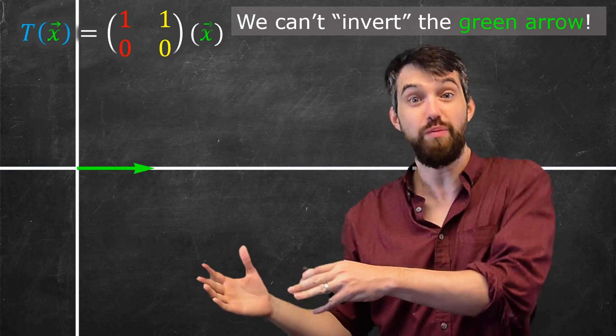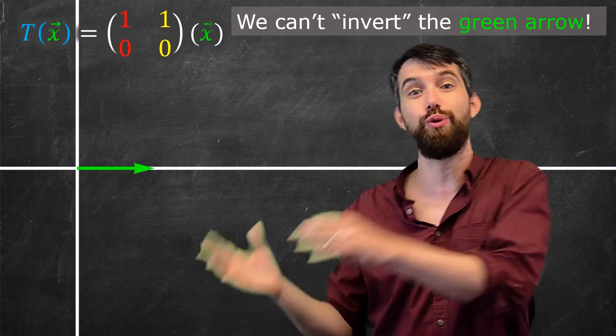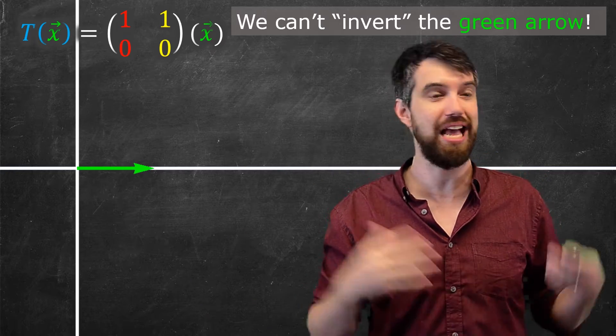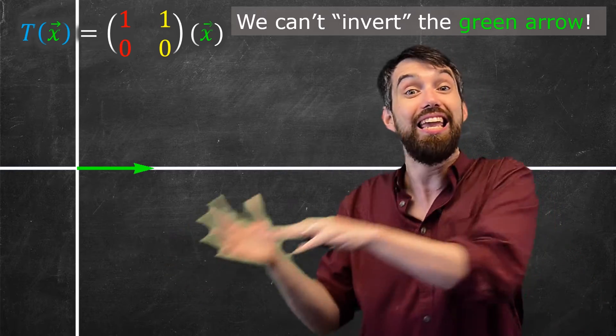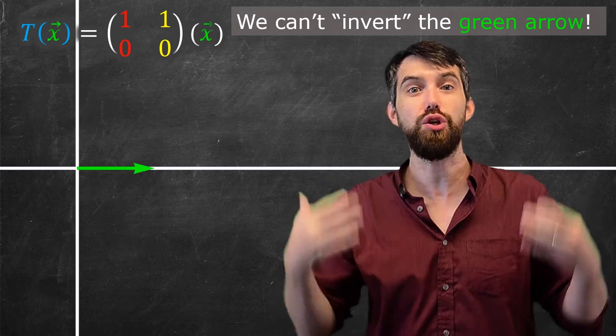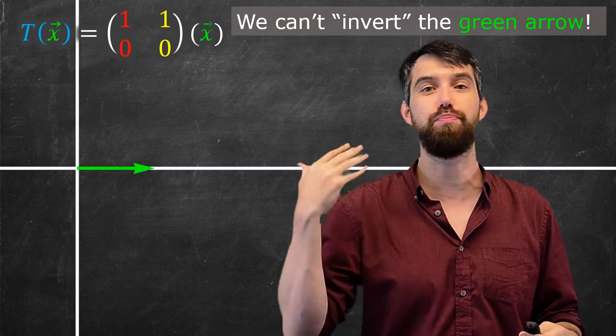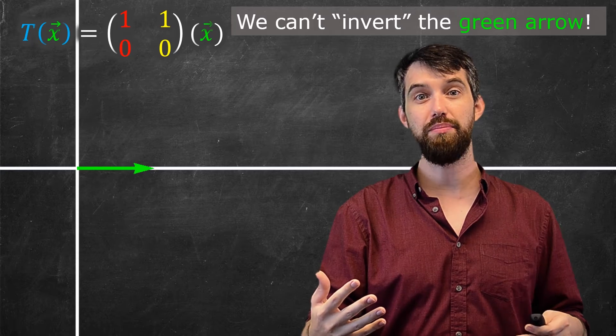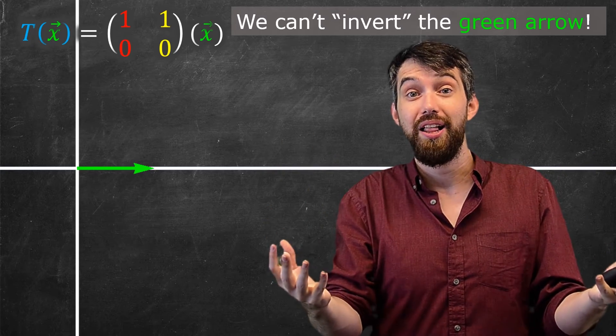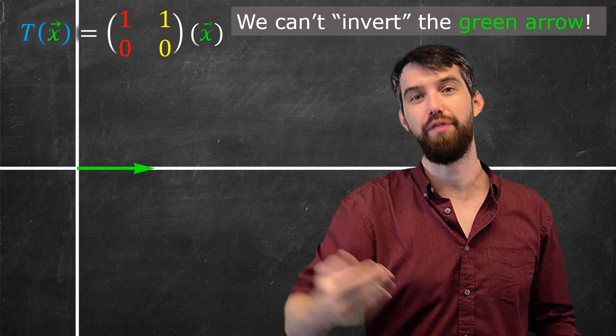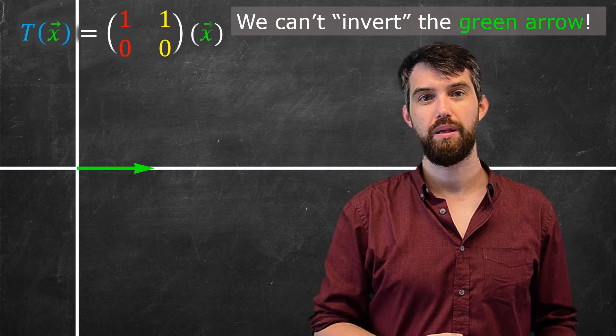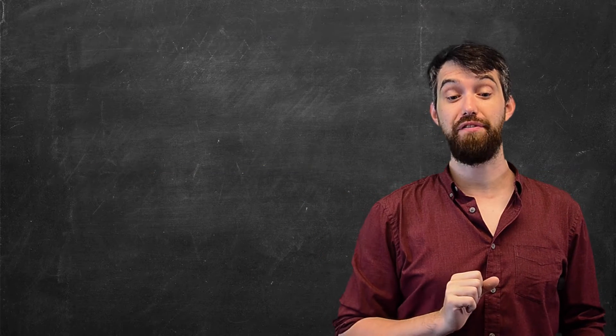So in other words, I cannot invert this green arrow. So this would give us some intuition that yes, some transformations can be inverted, and that I can reset them to their original state, and that the thing that resets them, the inverse transformation, is really a transformation. It obeys the properties of being a transformation. But sometimes, if not one-to-one, then it cannot possibly be invertible. Alright, next up, our formal definition.